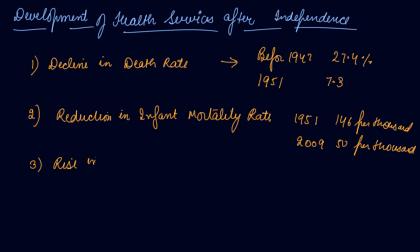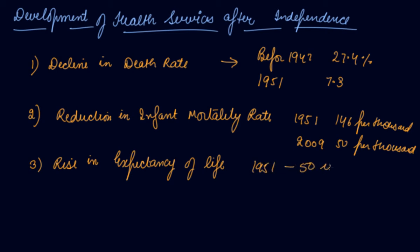Third is the increase in life expectancy. In 1951 it was about 50 years. But in 2006 and 2007, it is about 63.5 years — meaning on average a human being now lives to the age of 63.5 years.